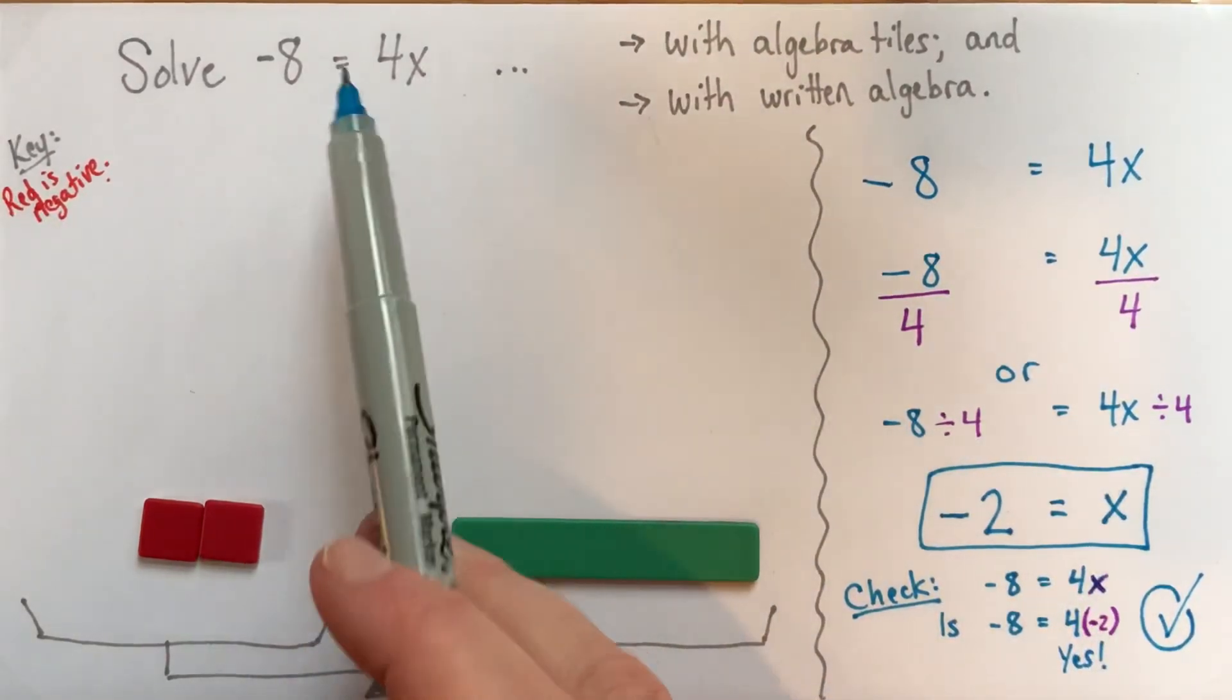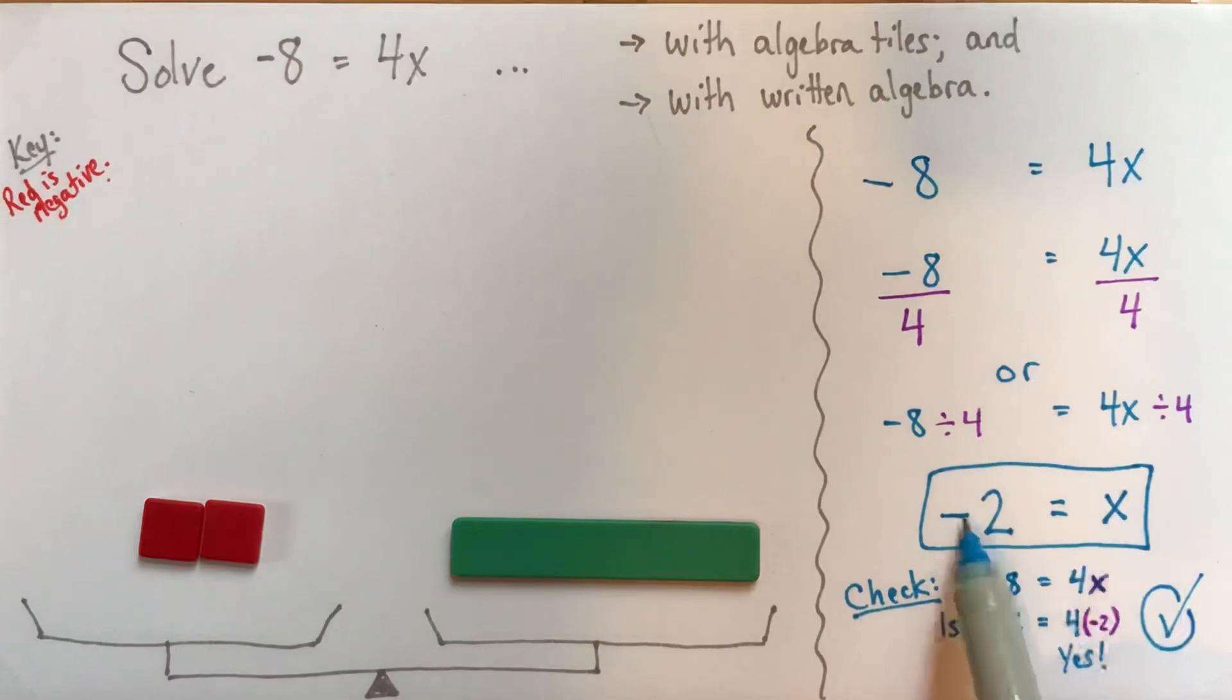So the solution to this equation. With algebra, we get negative 2 equals x. And with our algebra tiles, we got negative 2 is the same as x. And then we even double checked it. We wrote it out beautifully. And so this is the solution to this equation right here. Thanks.